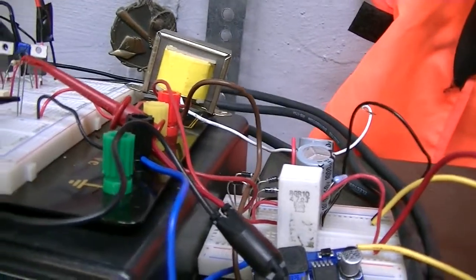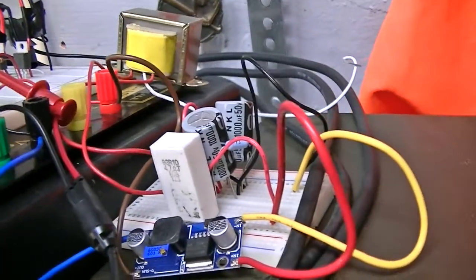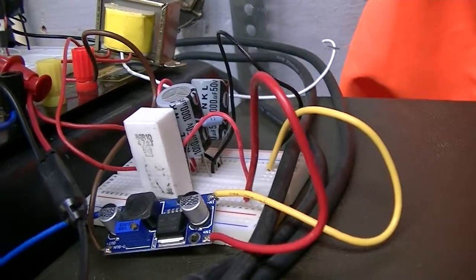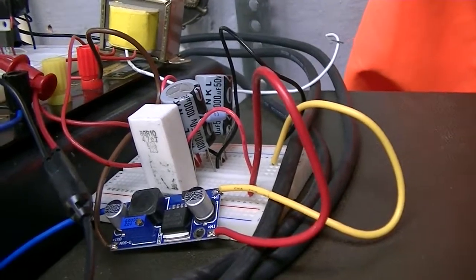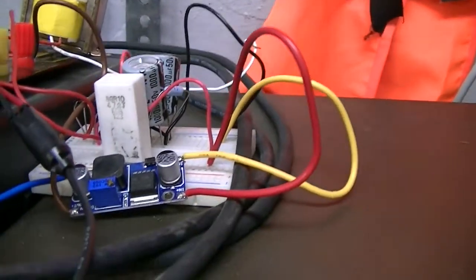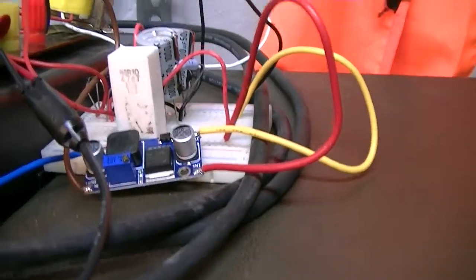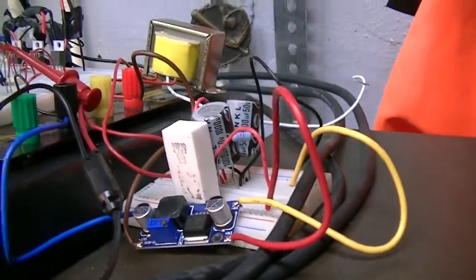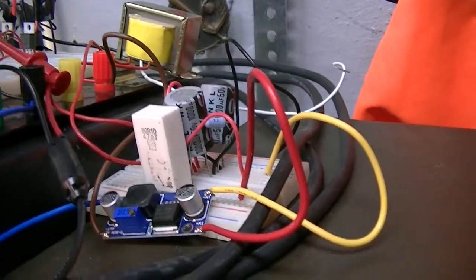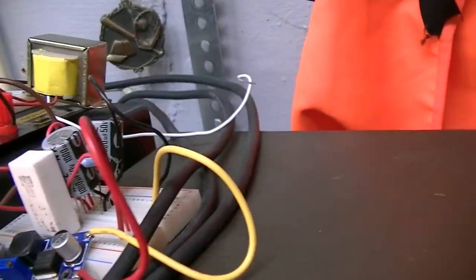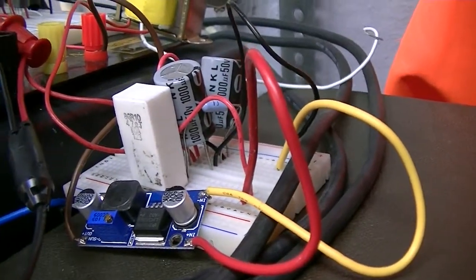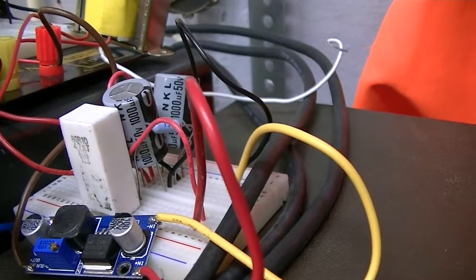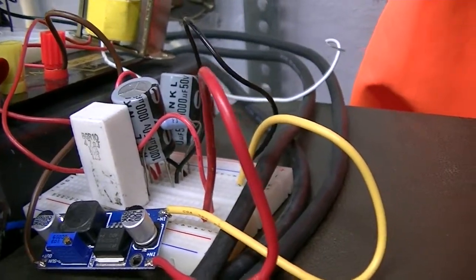I've got some discrete diodes there as a bridge rectifier. I've got two 1000 microfarad 50 volt electrolytics in parallel. I've got a 47 ohm 10 watt resistor in line with them to limit the current so that you don't get quite as big of a surge charging those two capacitors up. And that little resistor there is nothing more than just a bleeder resistor, about a hundred kilo ohms, just so I can bleed those two capacitors off a little bit quicker as I was experimenting.